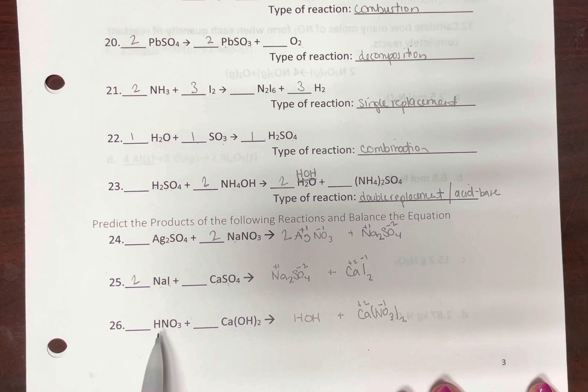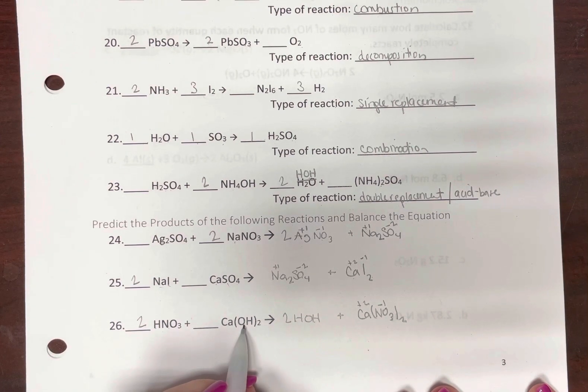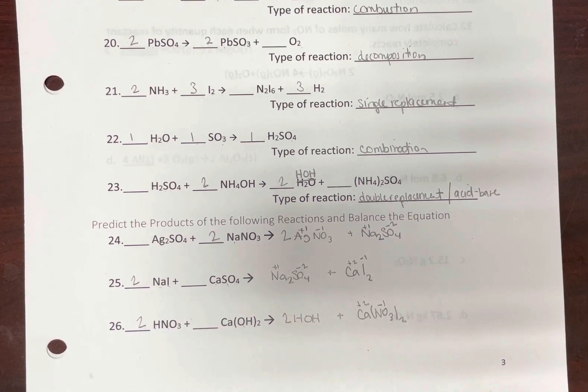Now we need to balance it. One hydrogen, two. Or one nitrate, two nitrates. There we go. Two hydrogens, two hydrogens. Two hydroxides, two hydroxides. One calcium, one calcium. Alright, turn the page.